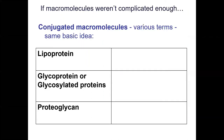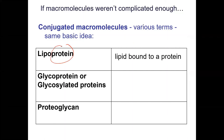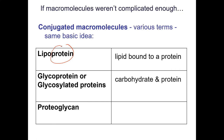Sometimes macromolecules are fused together. A lipoprotein is a protein with a lipid attached to it. A glycoprotein is a protein with a carbohydrate attached. A proteoglycan has the glycan — the carbohydrate — as the bigger component with proteins attached to it. Proteoglycans are massive carbohydrates found in your joints, absorbing lots of liquid and providing spongy material so joints don't hurt when you walk and jump. Sometimes people even get injections of proteoglycans to help their joints.